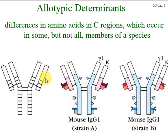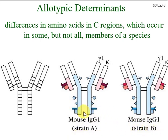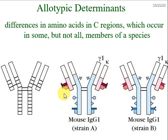Within a constant region there will be allelic differences. If we consider the same class of antibody molecule — say IgG1 — within a species but in different individuals, such as mouse strain A or strain B, the differences between these two in the constant region are called allotypic determinants. These differences arise because of allelic differences, and antibodies raised against this part are known as anti-allotypic antibodies.